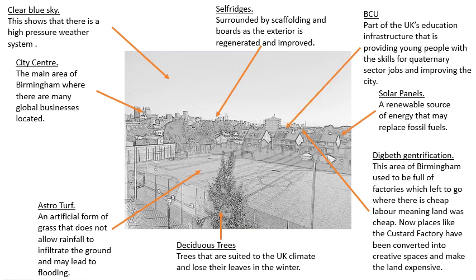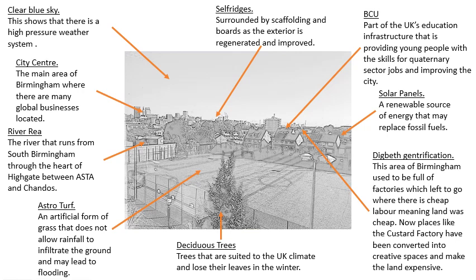Over on the right, just behind the houses, we can make out Birmingham City University. That's part of the UK's education infrastructure — something we talk about a lot in geography. It also provides young people with skills and quaternary sector jobs, where they're inventing new technologies or researching recent discoveries, which helps improve the city. Finally, I want to point out the River Rea that runs from South Birmingham through the heart of Highgate, between Arc St Albans and Chandos Primary School. Sometimes students come to school and go through years 7, 8 and 9 without realising it's a river — and then during GCSE they say there are no rivers in Birmingham, not realising it passes the school grounds every day.